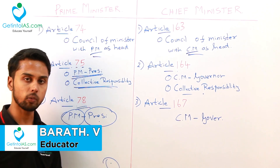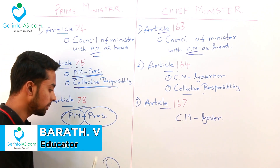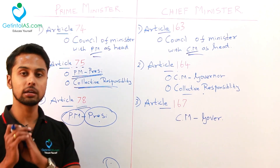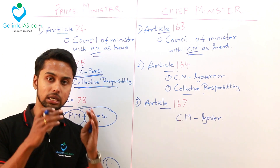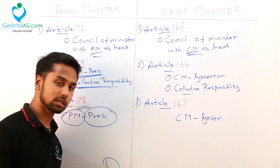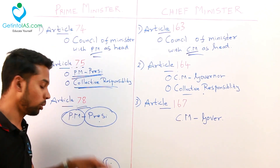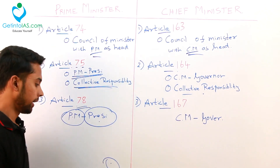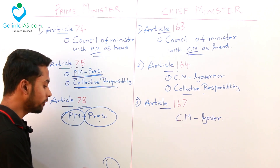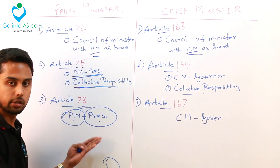When the council of ministers is taking a decision — for example, the Modi government, before passing GST, the cabinet or council of ministers would have discussed and come to a conclusion that they will introduce GST — it is the duty of the prime minister to inform that decision to the president. That is why he is acting as a bridge between these two.